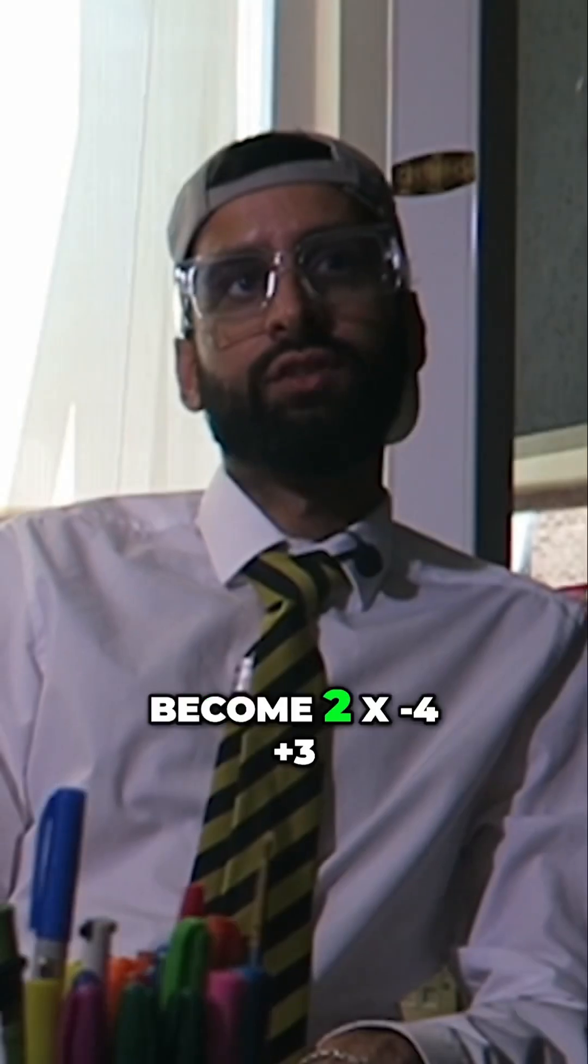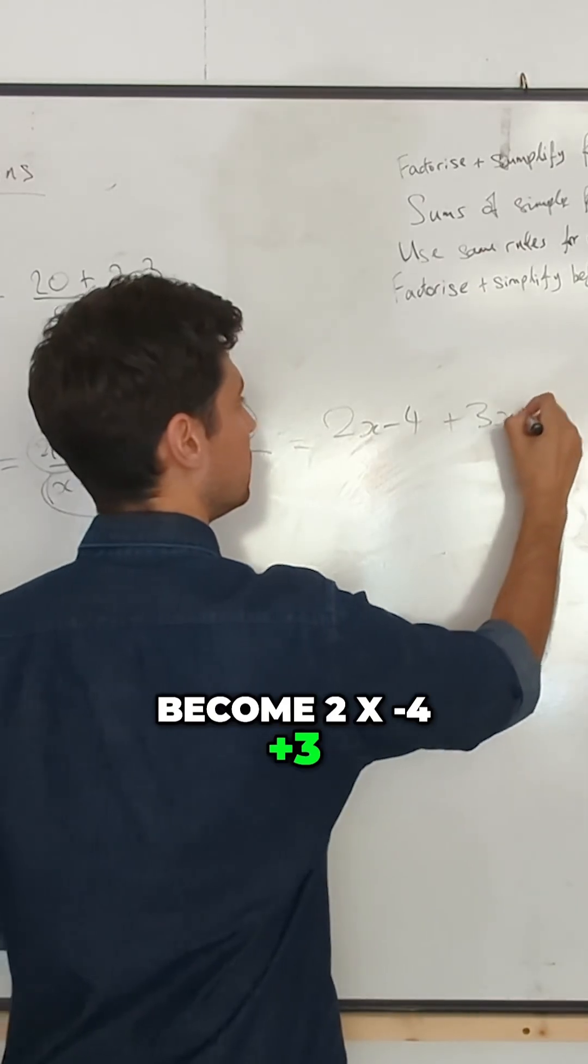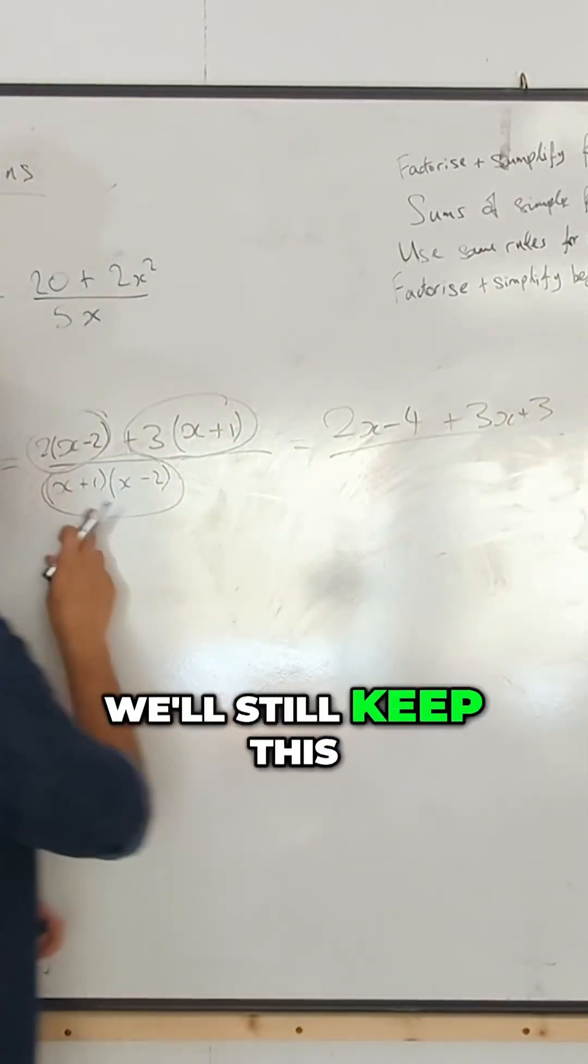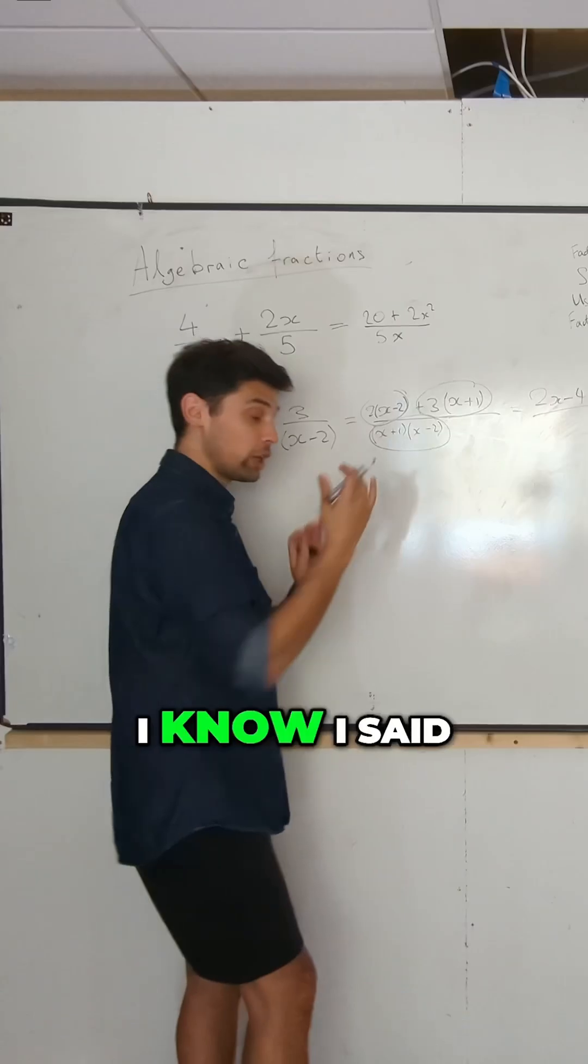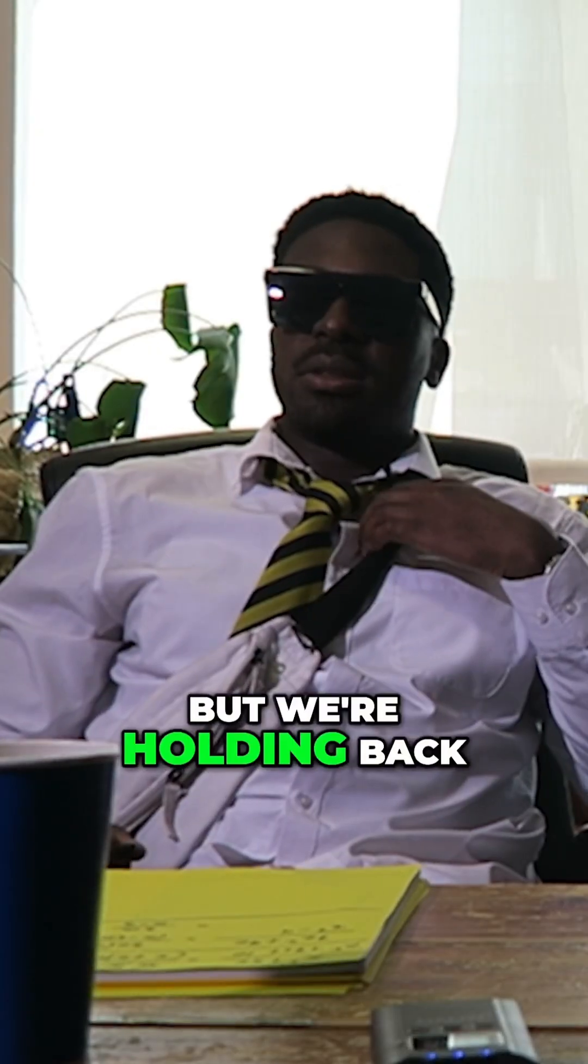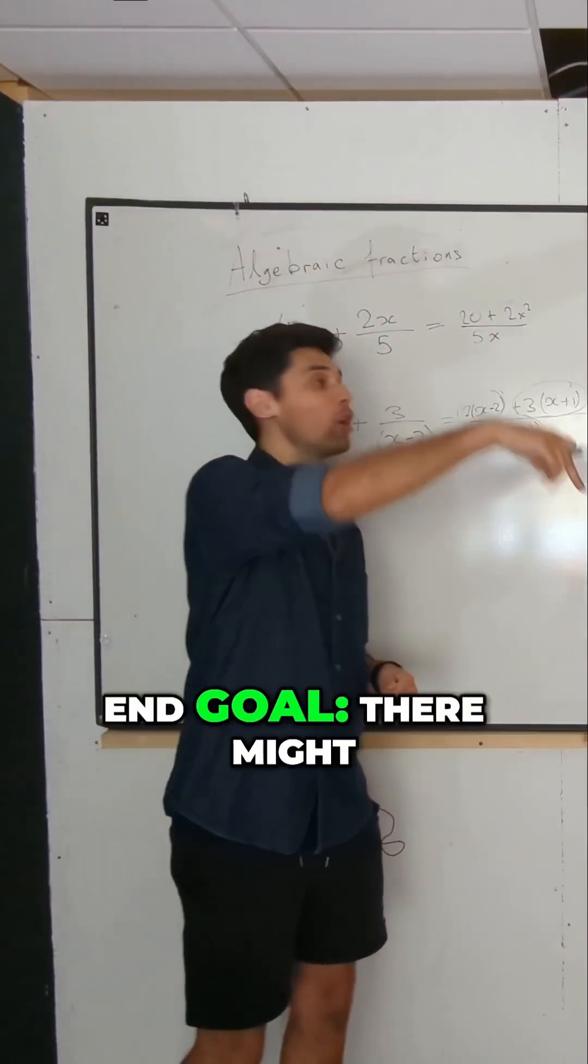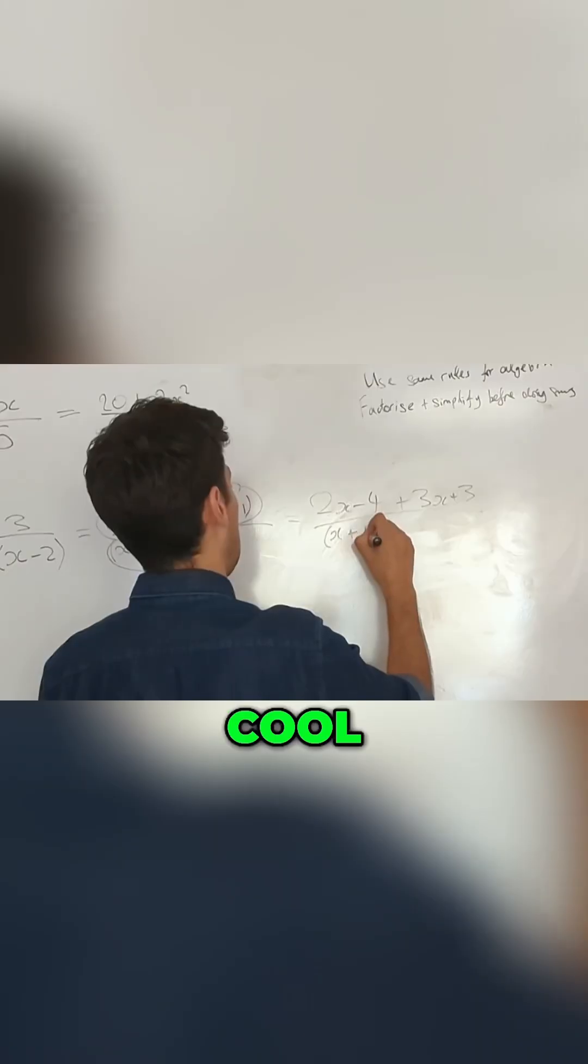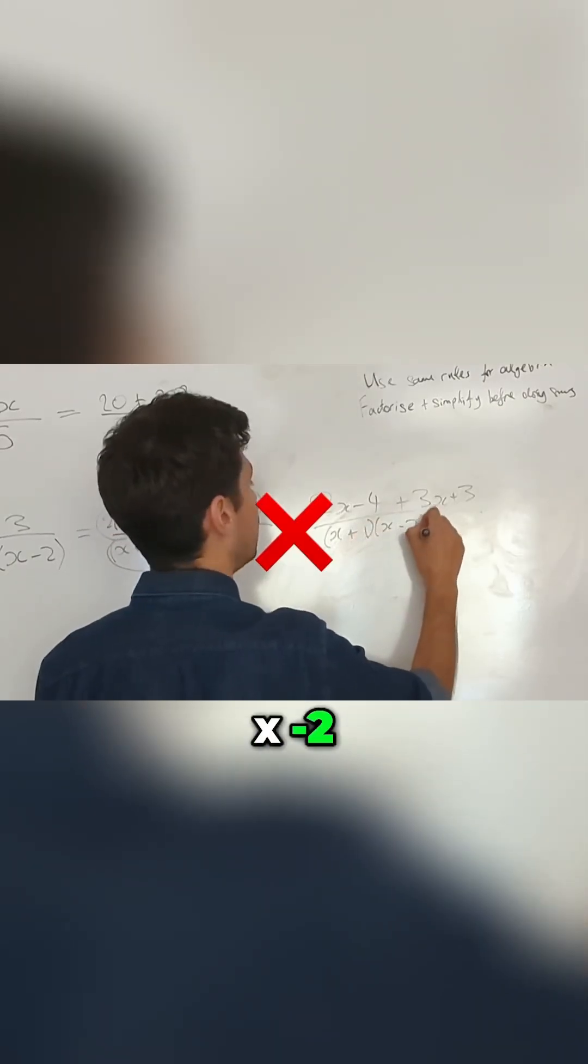So what will this become? 2x minus 4 plus 3x plus 3 over, and we'll still keep this as separate brackets. I know I said that instinct is to expand it, but we're holding back on that because we know end goal there might be some cancellation happening. Cool. x plus 1, x minus 2.